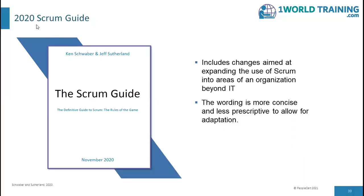This course material is based on the 2020 Scrum Guide, written by Ken Schwaber and Jeff Sutherland, the co-inventors of Scrum. It's the Definitive Guide to Scrum — The Rules of the Game — published in November 2020. It includes changes aimed at expanding the use of Scrum into areas of an organization beyond IT, with wording that is more concise and less prescriptive to allow for adaptation. Jeff Sutherland originated the first Scrum project in 1993 at Easel Corp, and working with Ken Schwaber, developed Scrum as a formal process in 1995.